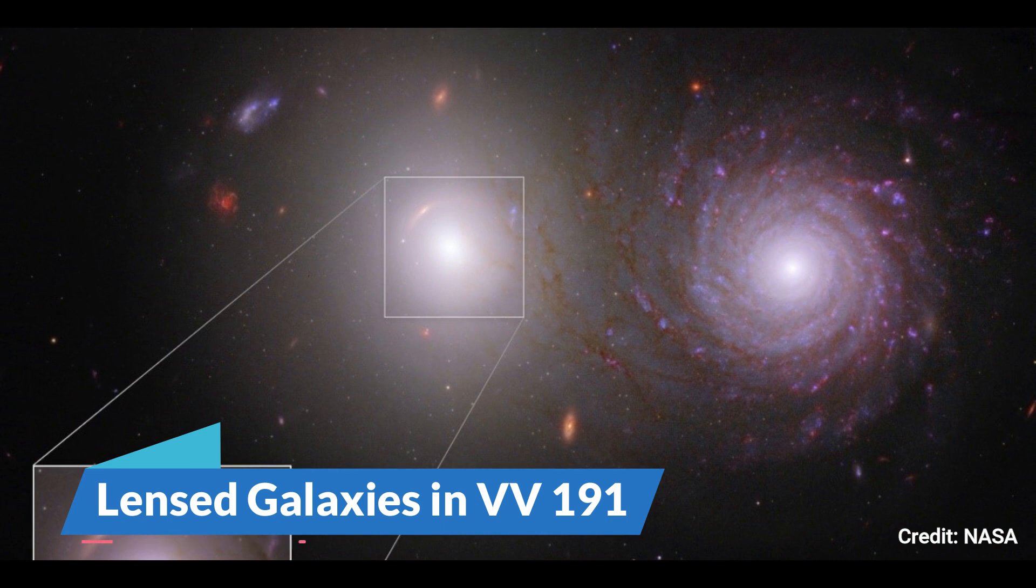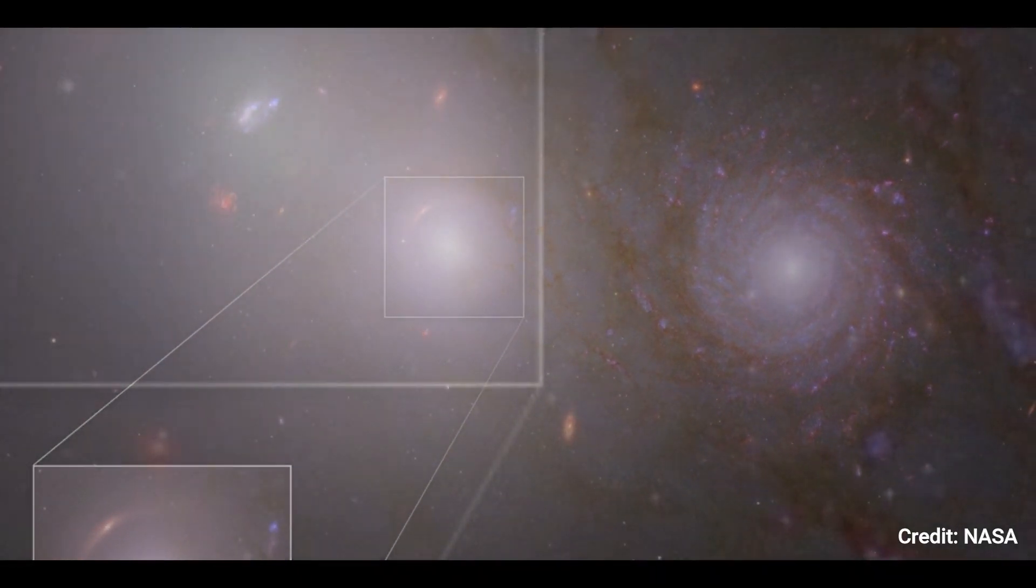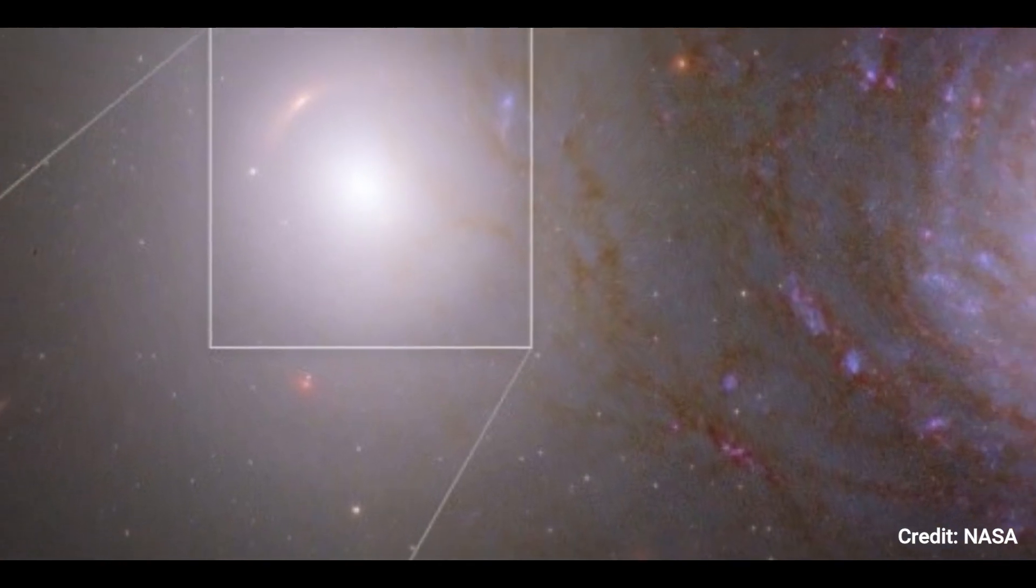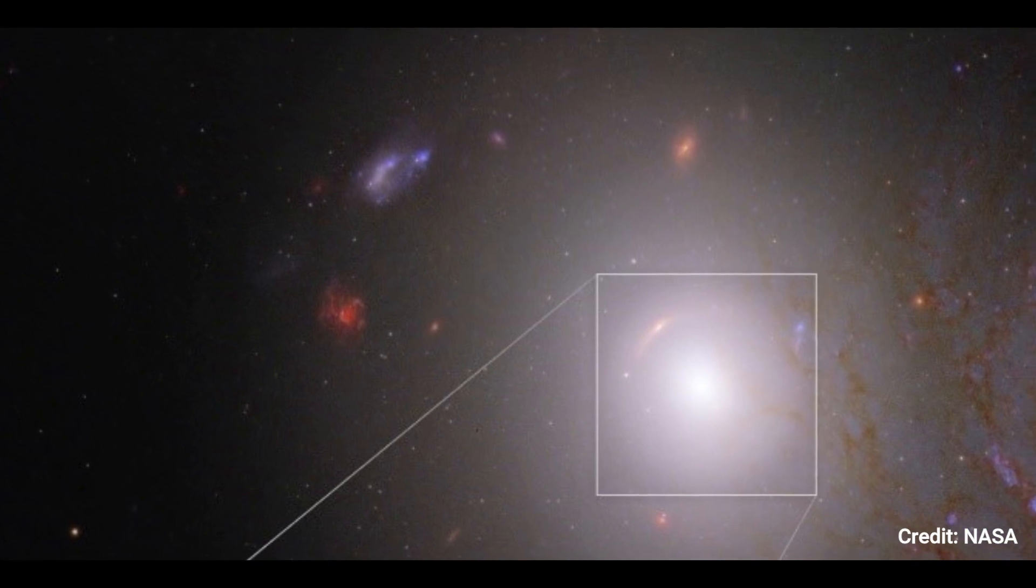Number 3. Lensed galaxies in VV191. In fresh near-infrared data from NASA's James Webb Space Telescope, researchers discovered a previously unknown lensed galaxy for the first time. Look at the white elliptical galaxy on the left.